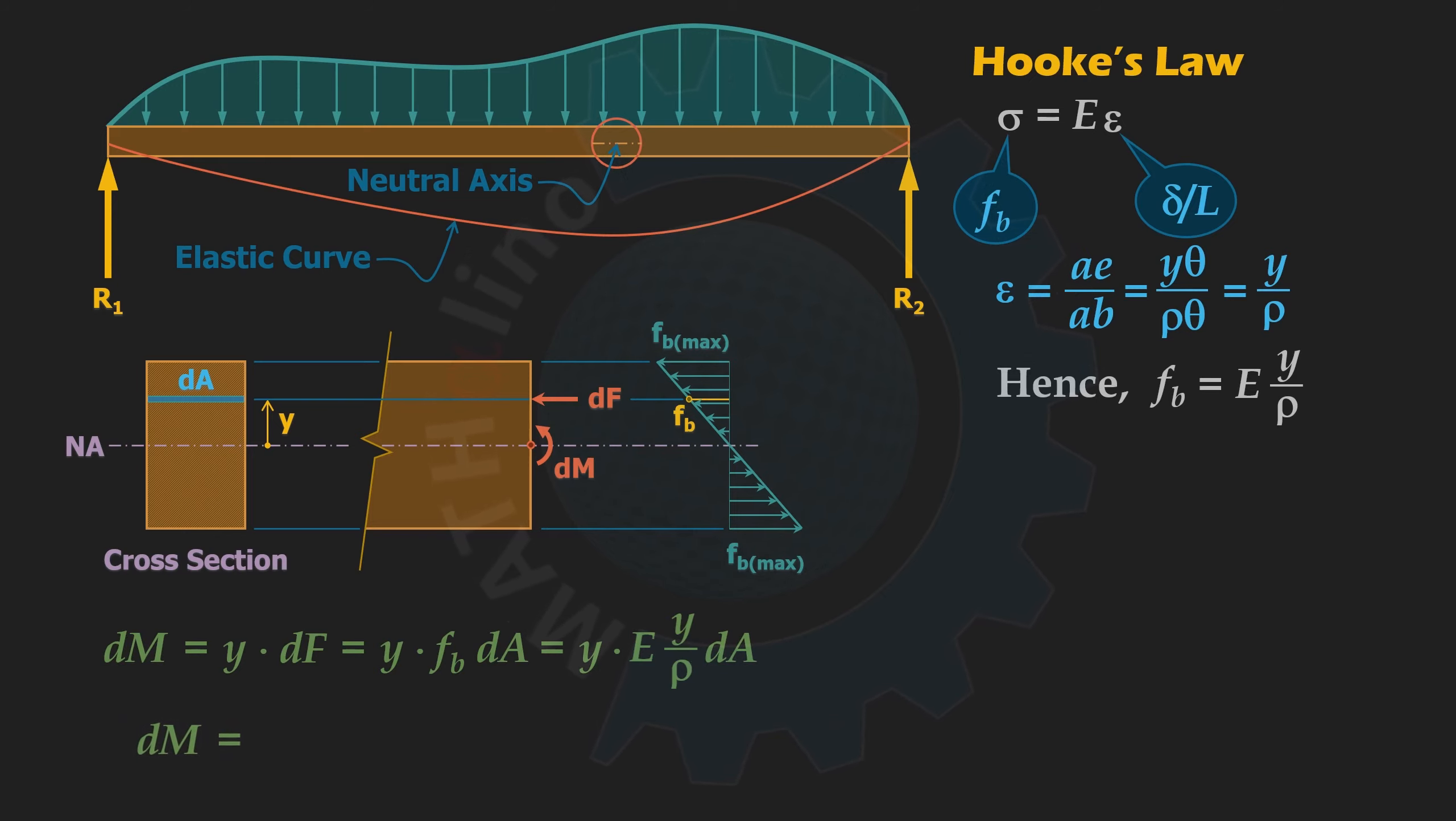dm now will become E over rho times y squared da. And let us accumulate all of the dms. To do that, we are going to integrate both sides of the equation. Recall from calculus that this quantity is called the moment of inertia of the section. After integration, our equation is now M is equal to E over rho times I.